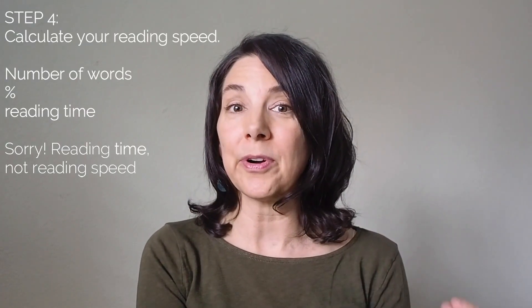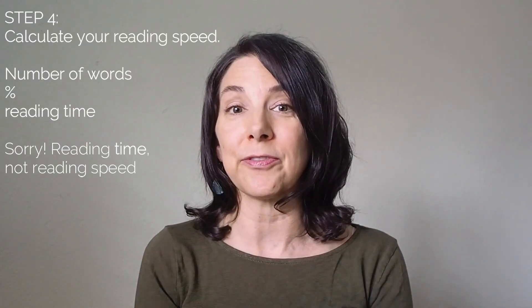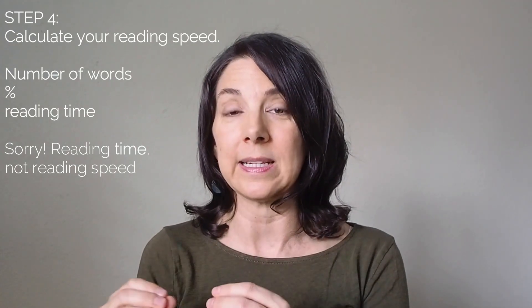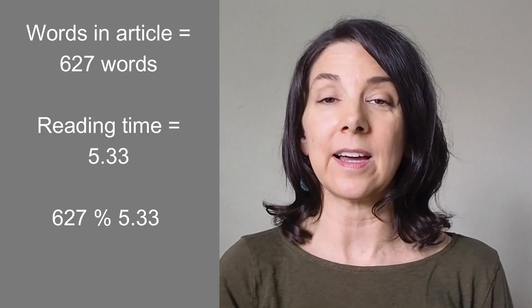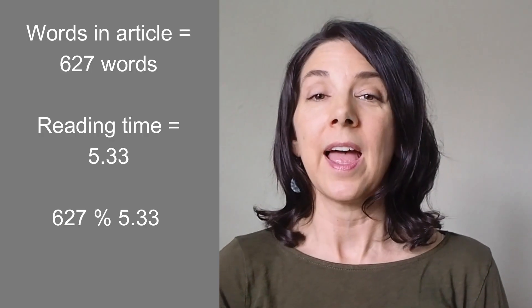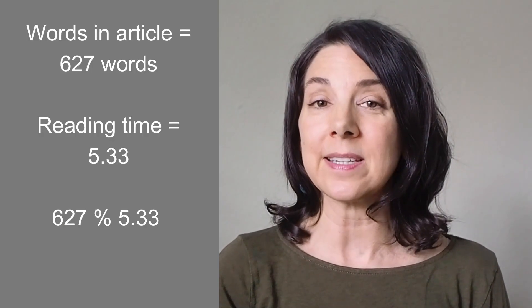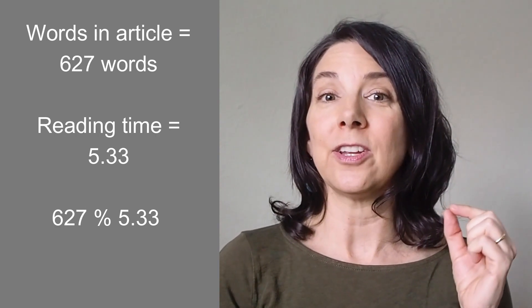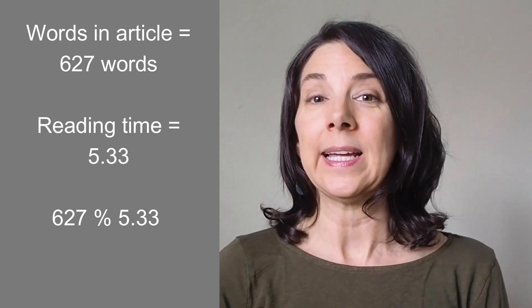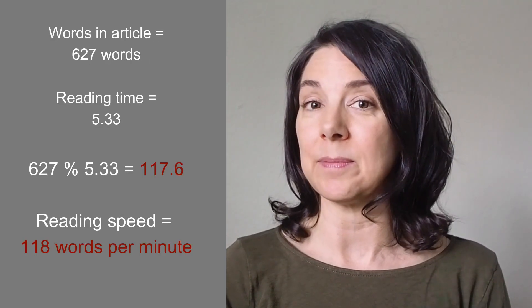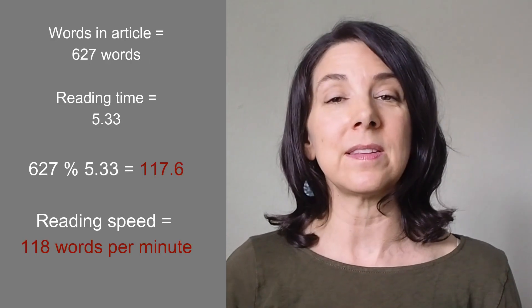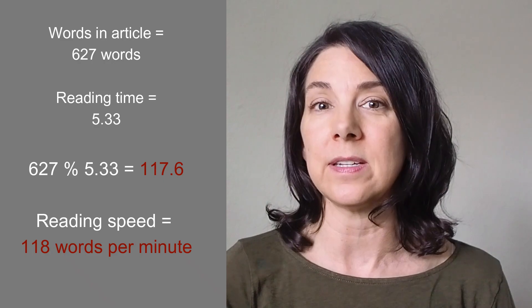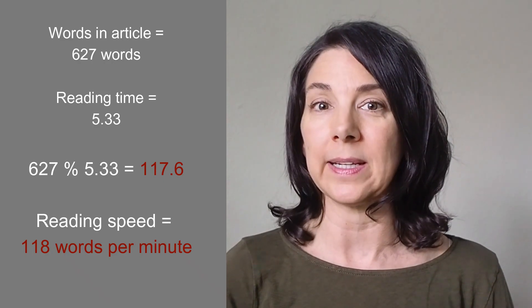Next, take the number of words and divide that by your reading time. For example, if the article has 627 words and your reading time is 5.33, then your words per minute is 117.6 — meaning you read about 118 words per minute in English.